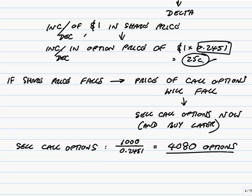And if he sells 4,080 options, if the share price falls, the money he loses on his shares, well, because the call option price will fall as well, he'll gain for exactly the same amount on his options. And that's known as a delta hedge.